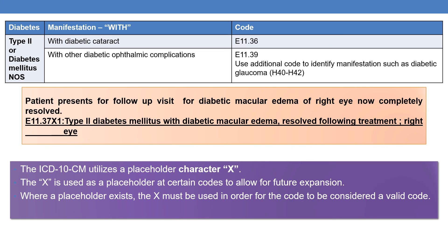In addition, the placeholder X is also used in adverse effects codes, which come under category T35 to T50.